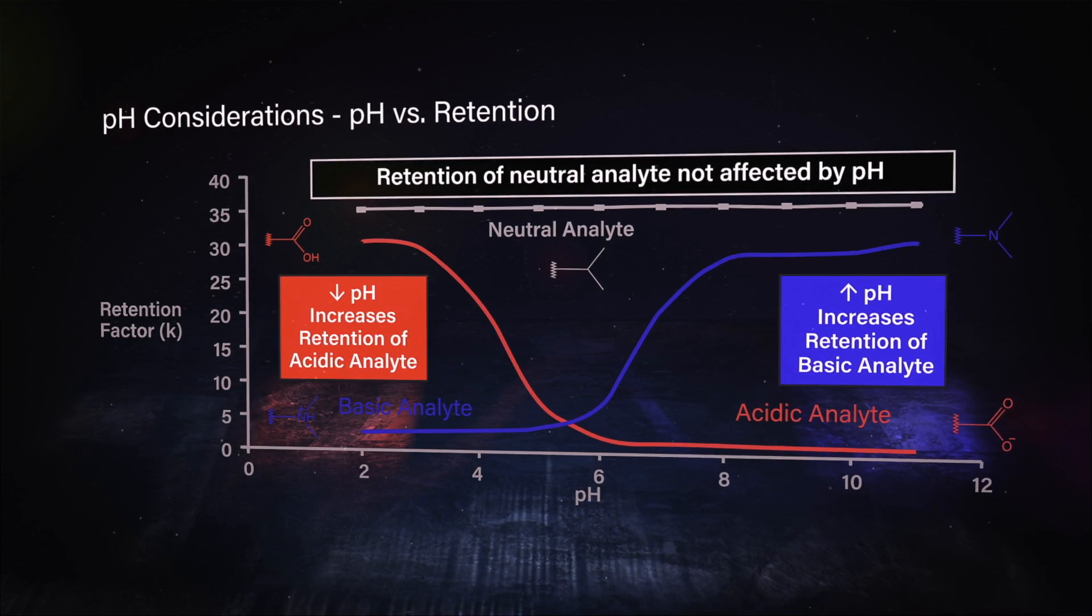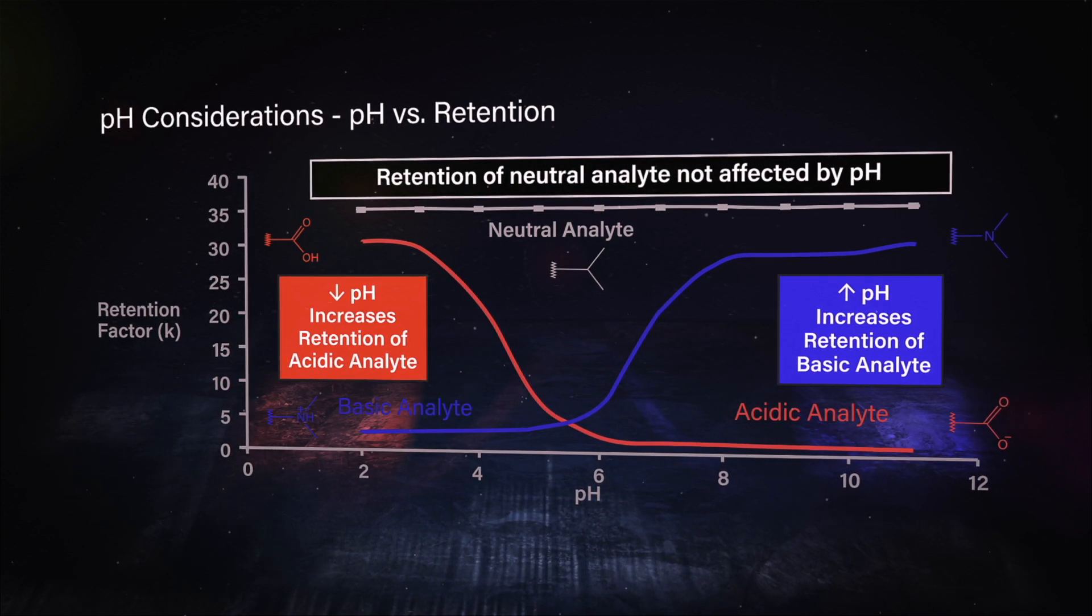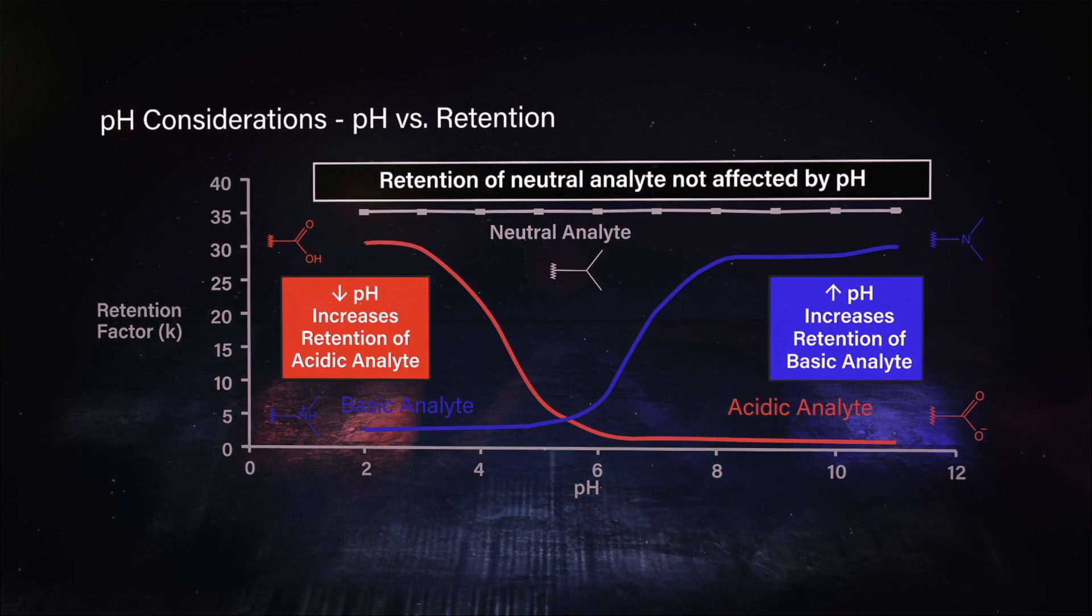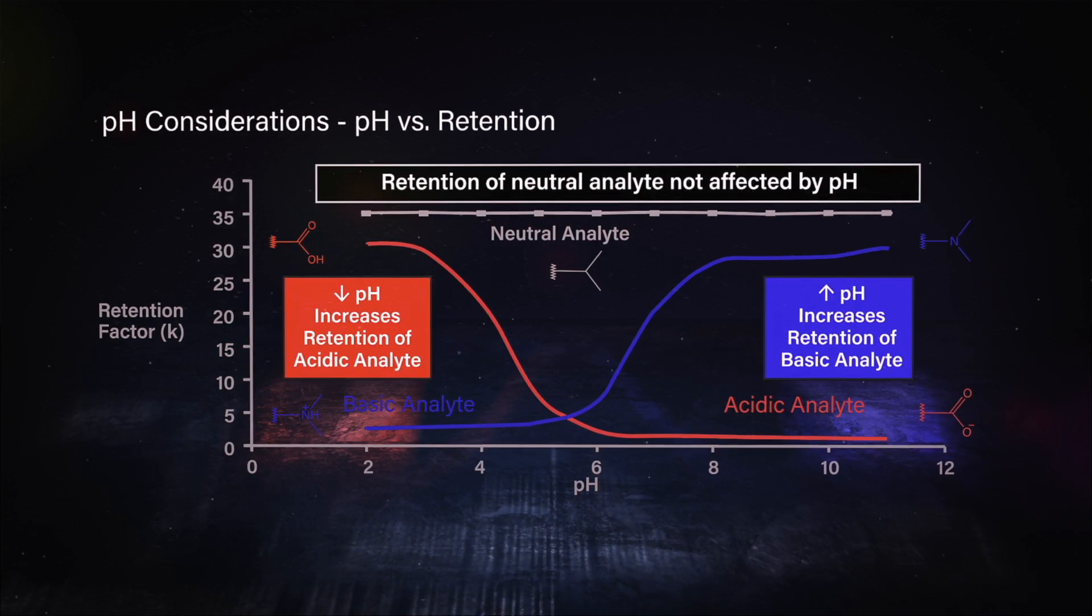But as you can see, as you increase pH going from 2, say, up to 10, those basic compounds now become unionized, more hydrophobic, and more retained. So you can really move around acids and bases just by changing the ionization state.